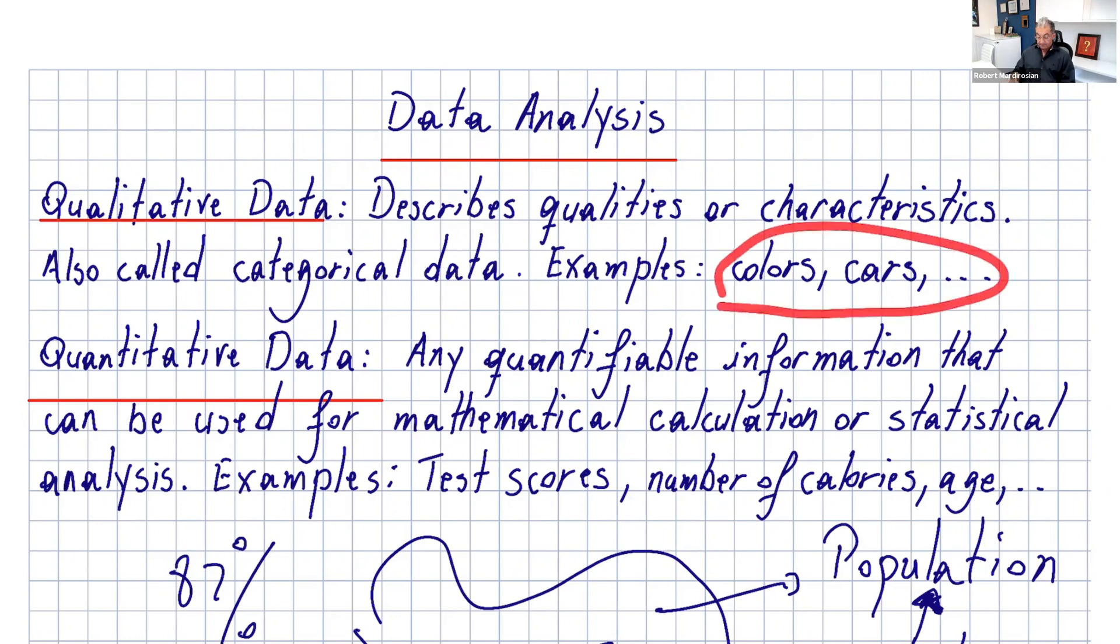Quantitative data is any quantifiable information that can be used for mathematical calculation or statistical analysis. Examples of that can be test scores, number of calories, age, and so on. So you can use mathematics to do the statistical analysis.